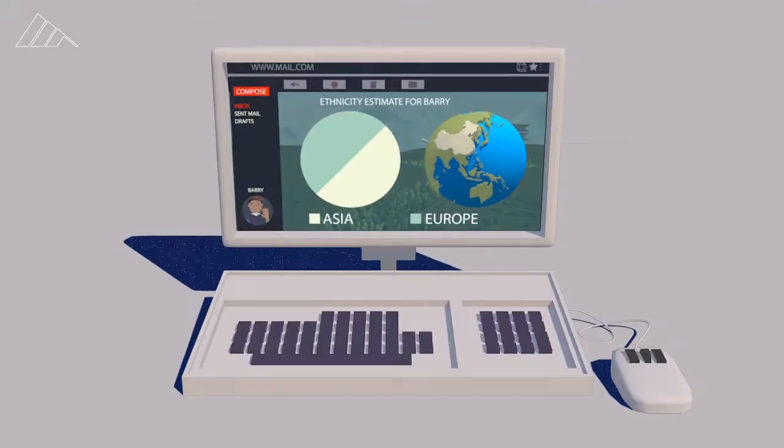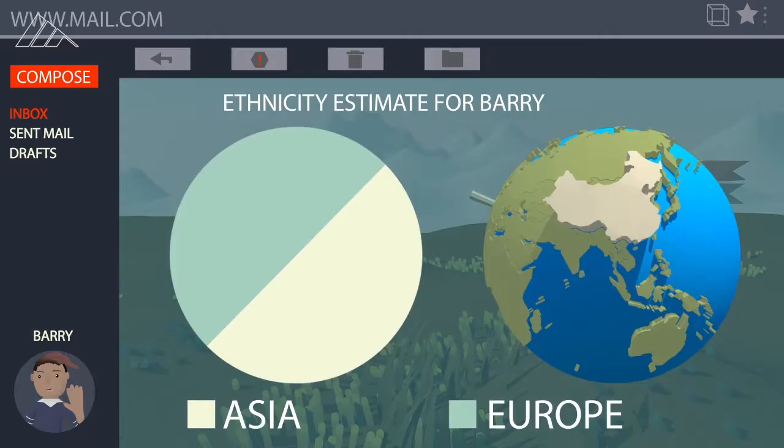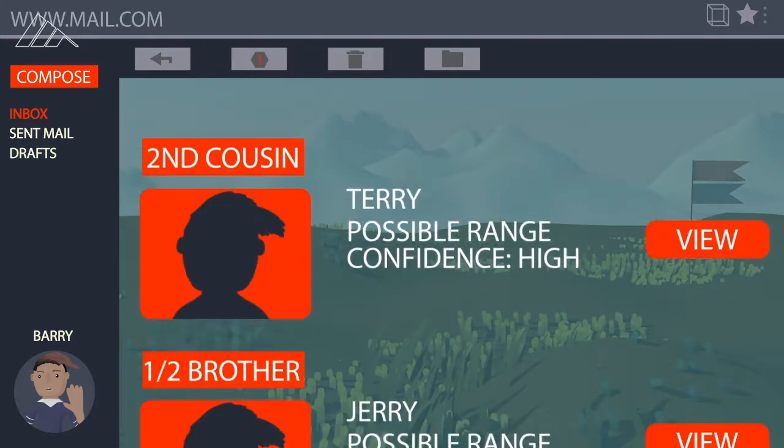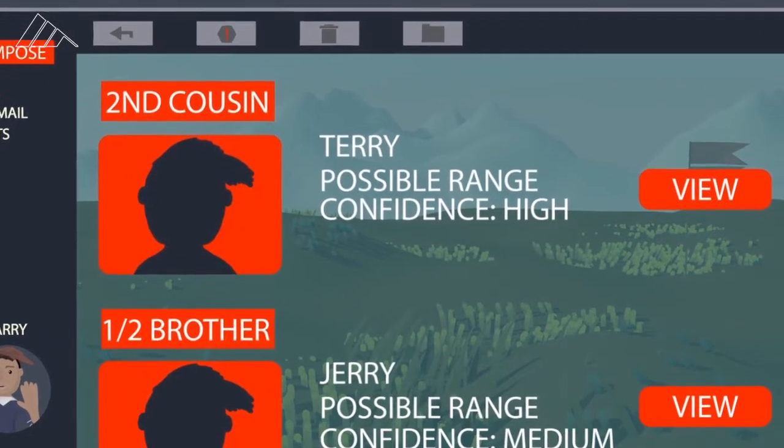Next, you get an email with the results including a breakdown of ethnicity and a list of close relatives if you opted into that option.